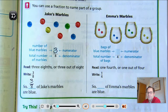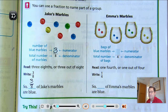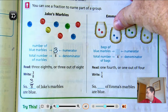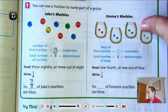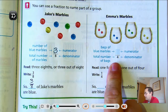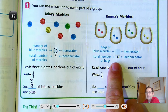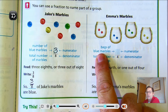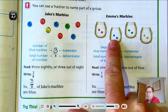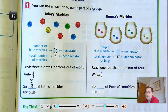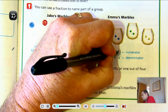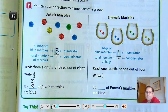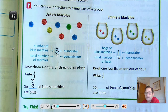How about Emma's? How many total bags does she have? She has 1, 2, 3, 4. So in her collection there are 4 equal bags. And how many bags of marbles are blue? 1. So 1 fourth of her collection, or 1 out of 4, is blue.